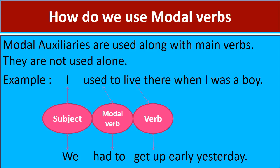How do we use modal verbs? Modal auxiliaries are used along with main verbs — they are never used alone. For example, 'I used to live there when I was a boy.' Here first we use the subject, then the modal verb 'used to,' and 'live' is the main verb. One more example: 'We had to get up early yesterday.' First we use the subject 'we,' followed by the modal verb 'had to,' and then the main verb 'get up.' Modal verbs are always used before the main verb.